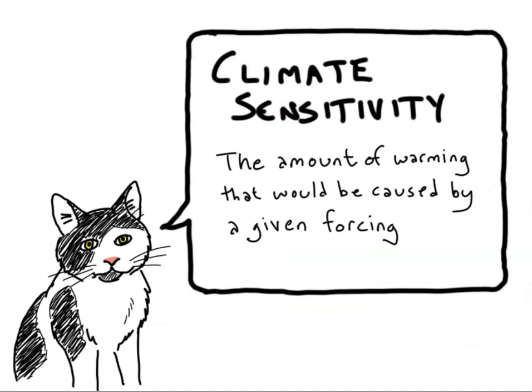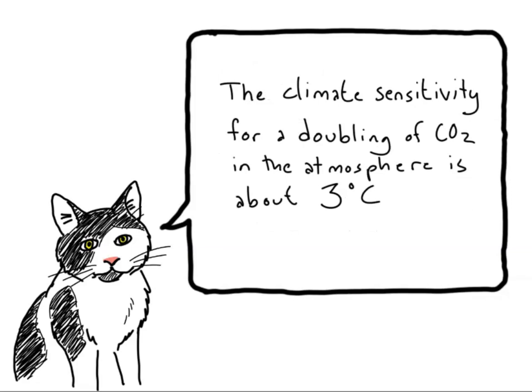Climate sensitivity is the amount of warming that we expect from a given amount of forcing. Typically, we talk about climate sensitivity in terms of the amount of warming from doubling the amount of CO2 in the atmosphere. The most common estimate is about 3 degrees Celsius. That is, a doubling of CO2 with no other forcings would cause a rise in the Earth's temperature of about 3 degrees.